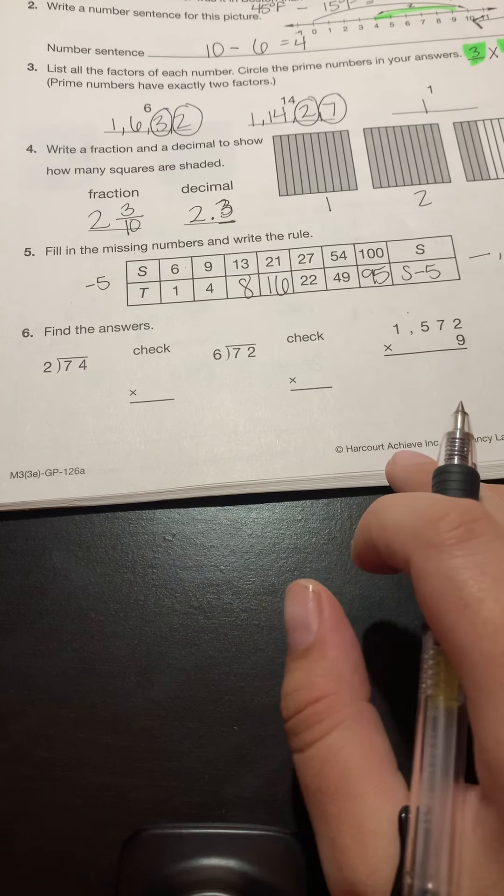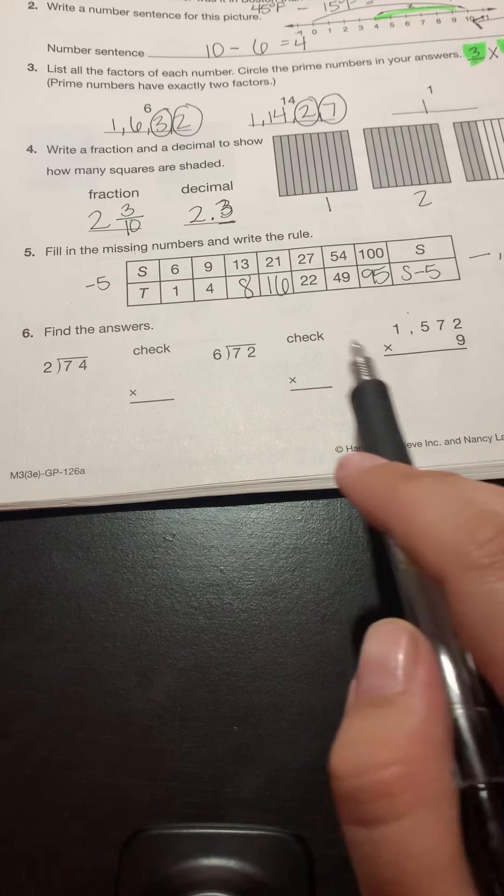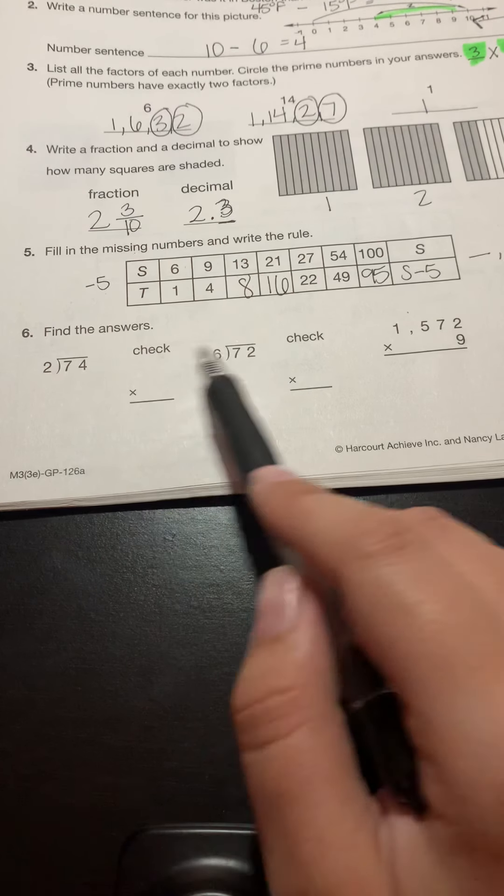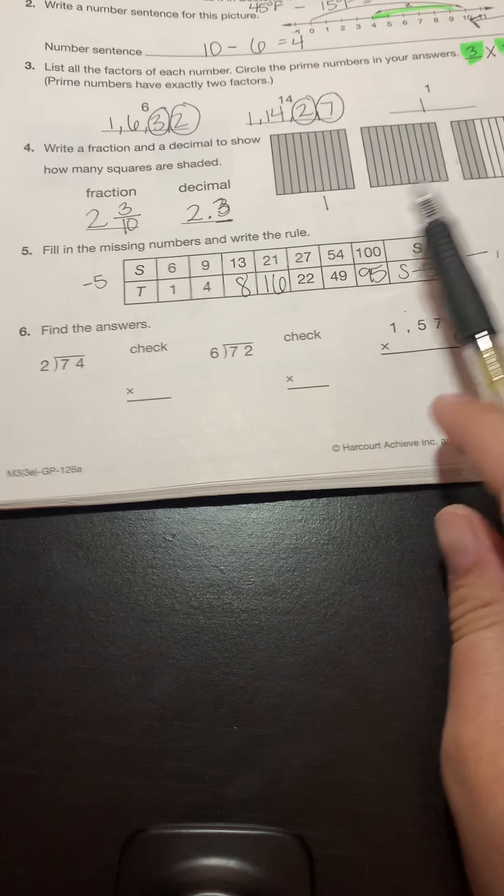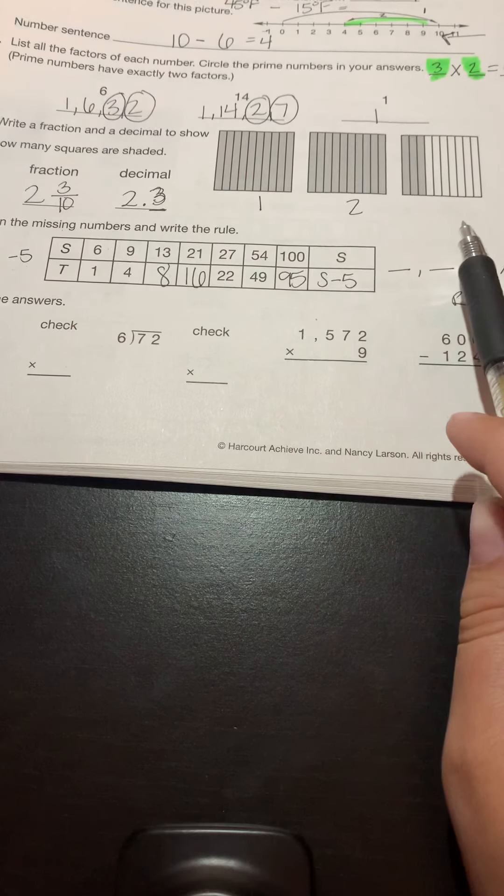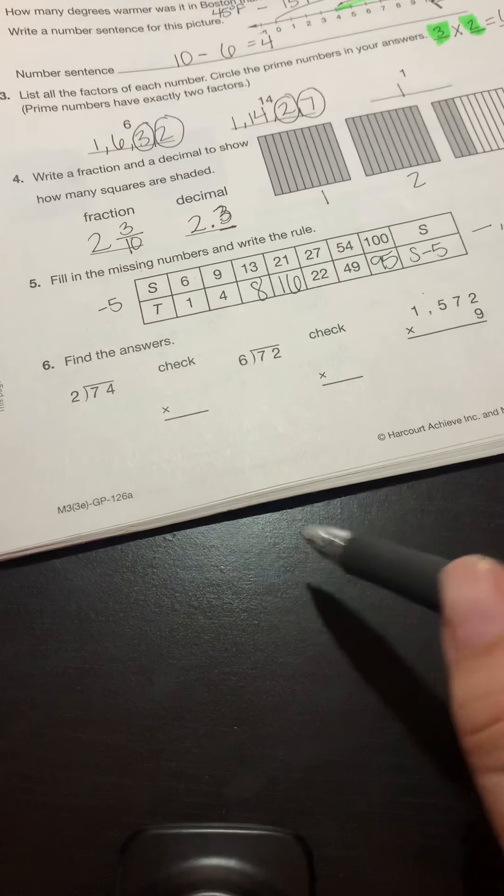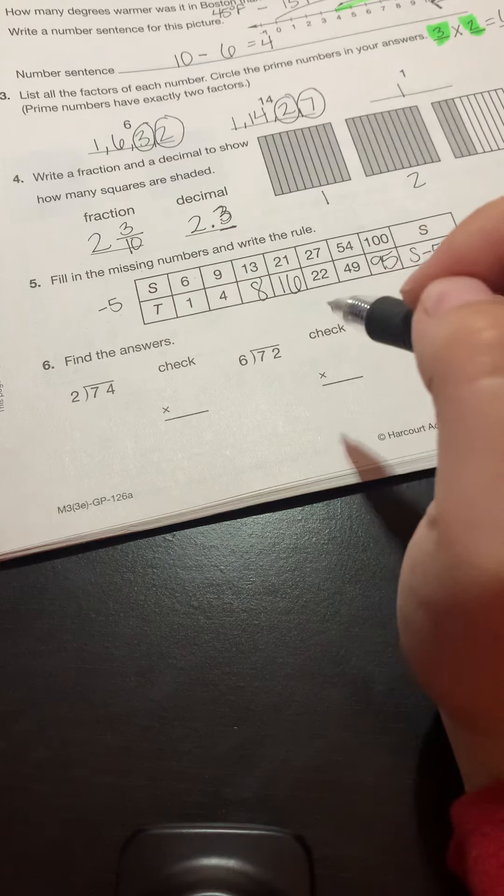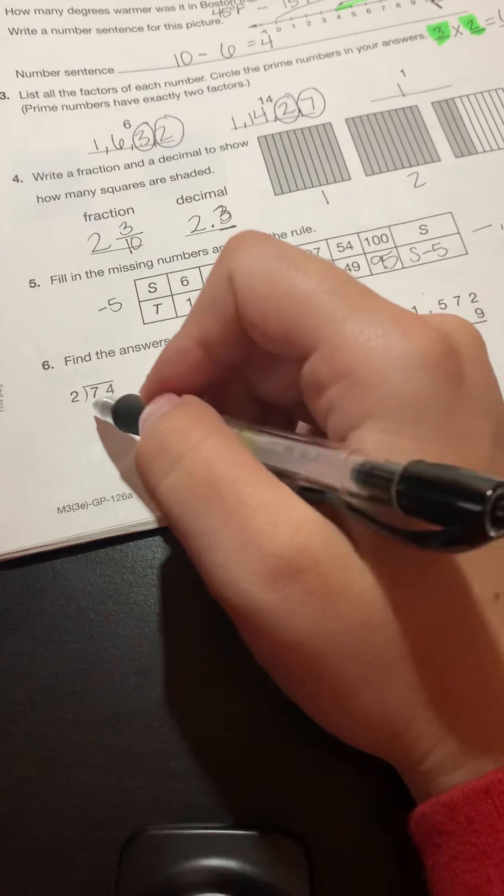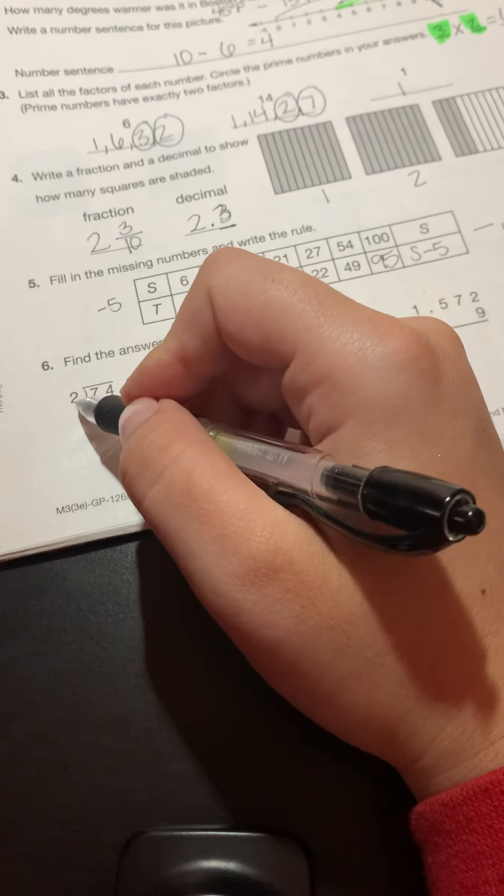All right, last couple problems for your classwork. Find the answers. We're going to practice our long division and practice checking. And then we're going to multiply and subtract across zeros. So let's get started. How do we start doing this long division? What's the first thing I need to do?